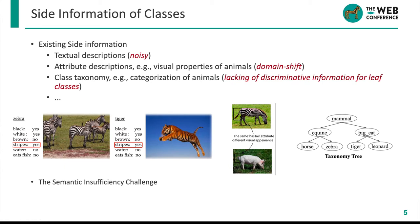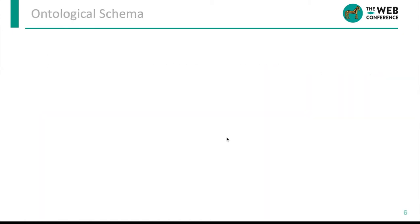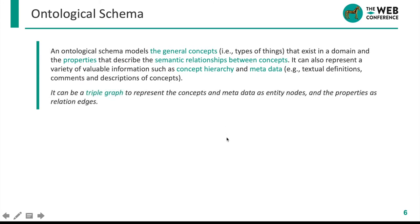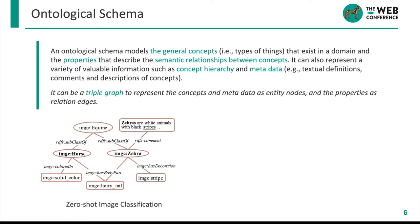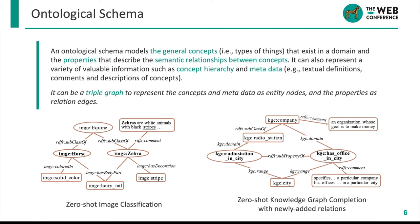Targeting this, we expect more complete and more expressive side information to boost the performance of ZSL, and we believe the ontological schema is the solution we desired. Ontological schema, also known as ontology, is famous for modeling concepts in a domain and the semantic relationships between concepts. It also contains valuable information such as concept hierarchy and metadata. We use these ontologies to integrate existing class side information in zero-shot image classification and zero-shot knowledge graph completion, introducing ontological side information such as entity type constraints and relation hierarchies.